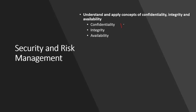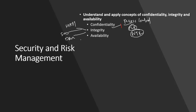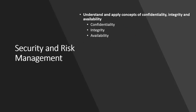Under confidentiality we have principles like access control, principle of least privilege, and need-to-know. These principles are introduced to achieve confidentiality. Under integrity we have hashing, separation of duty, dual control, and parity. Under availability we have BCP, DR, RAID, and load balancers — these are the solutions by which we can maintain information availability whenever required.